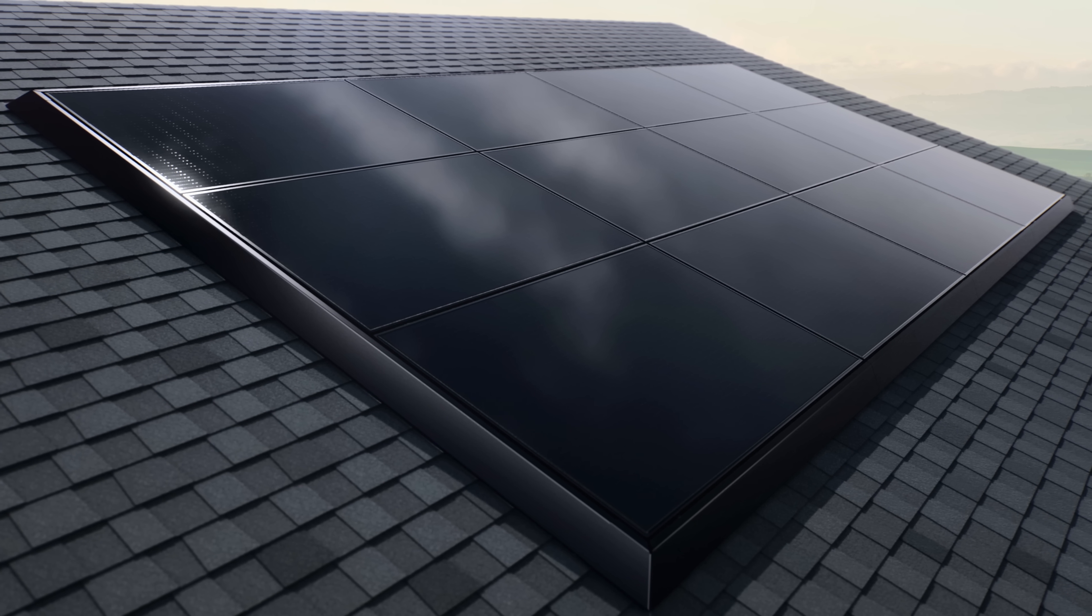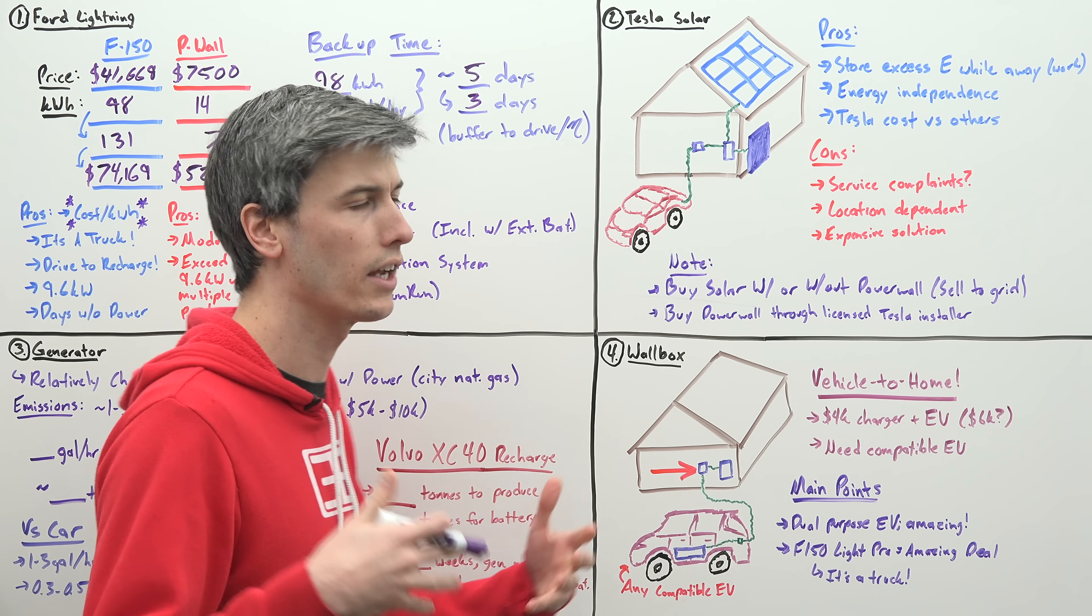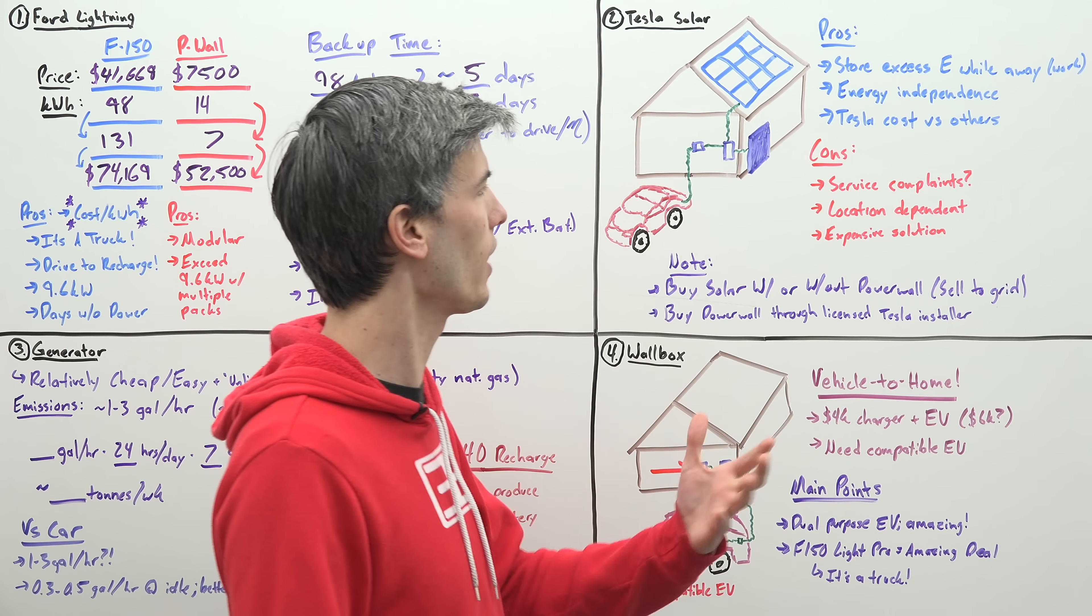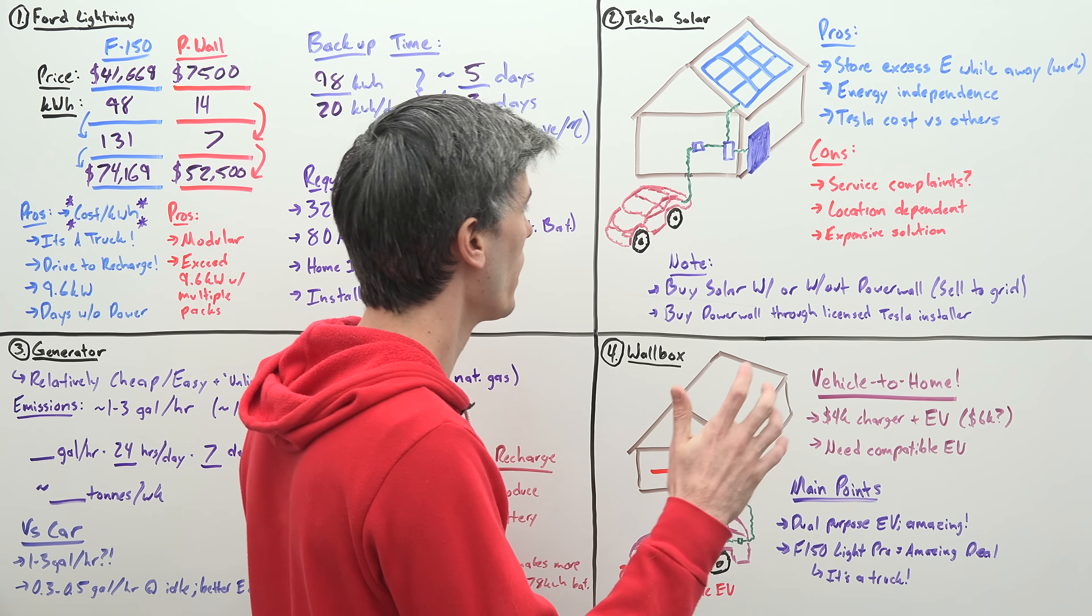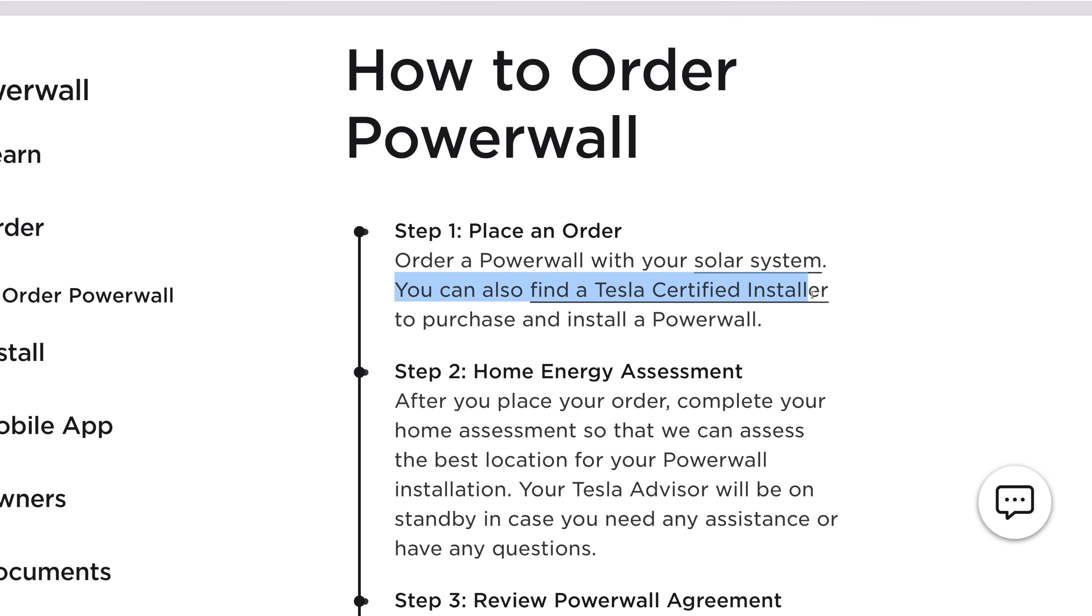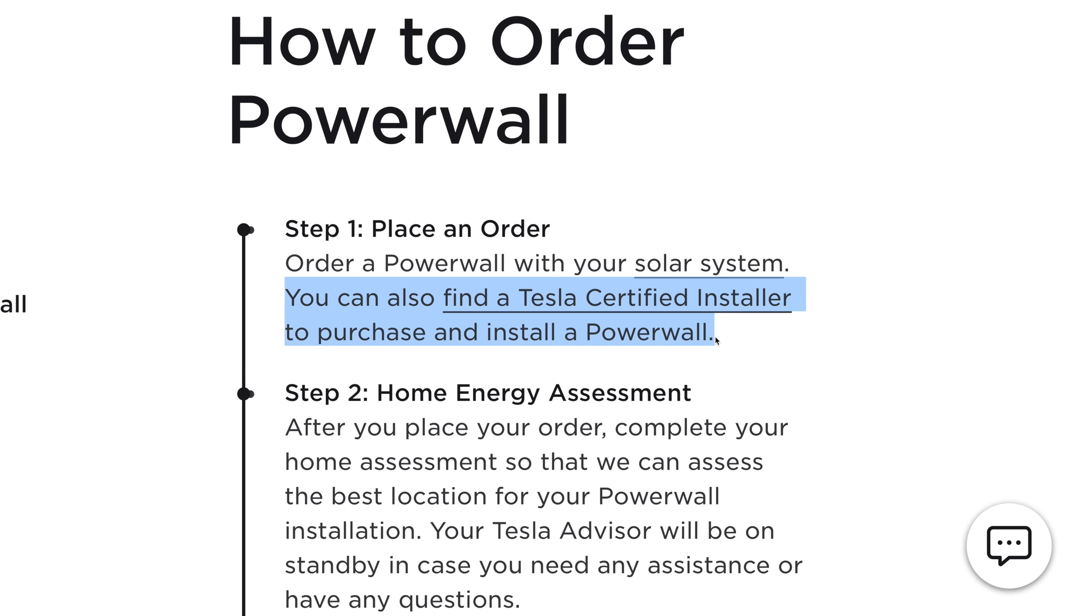A couple other things worth pointing out. You can buy solar with or without the Powerwall. So in the case that you're away from home and you're making excess energy, depending on where you live, you could be selling that energy back to the grid and making money off your solar panel. So that is one thing that could happen. Another thing to note is that you can buy this Powerwall separately, Tesla says, through a licensed Tesla installer.